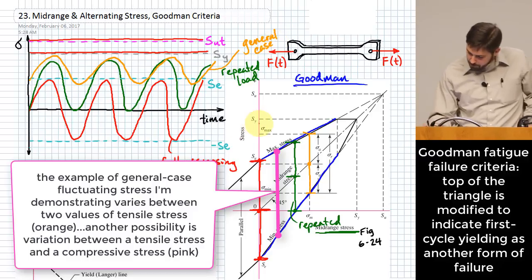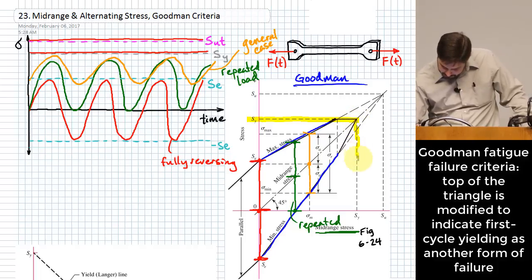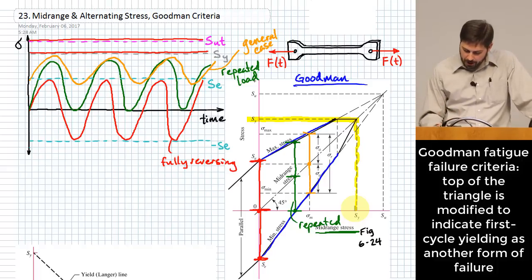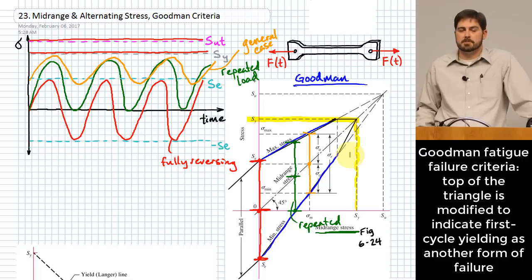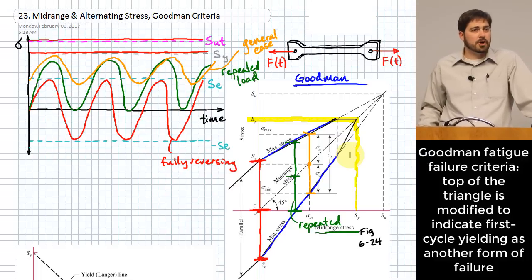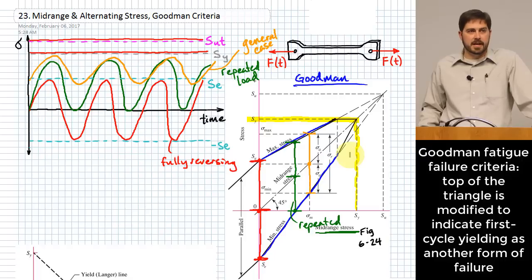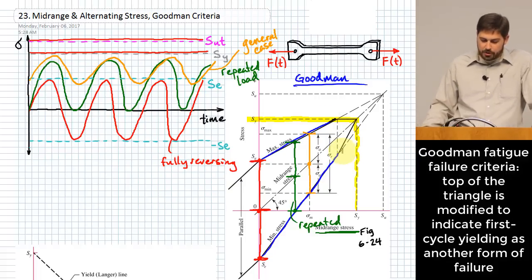On the Goodman diagram, they also plot where the yielding point would be. It's common for the Goodman criteria to chop off one end of the failure criterion if you define yielding as failure — which is probably a good idea in most cases for fatigue, because if you start causing yielding in one direction, it's likely it might yield in the other direction too. Repeated yielding inside your material means it's unlikely to last.